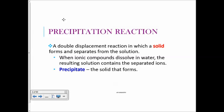Why do we need to balance our chemical equations? The law of conservation of matter, or mass, shows that matter is not created nor destroyed — it just gets altered. That's why in a chemical reaction you have bonds breaking, bonds forming, and you get new substances.